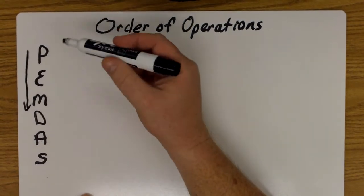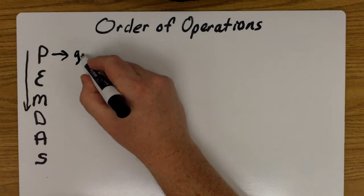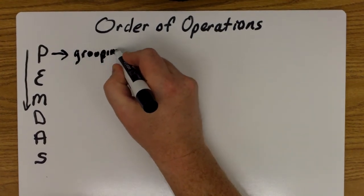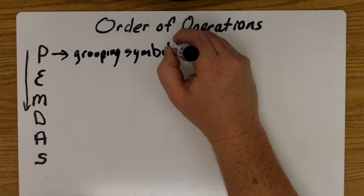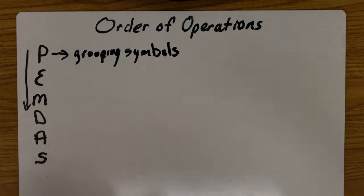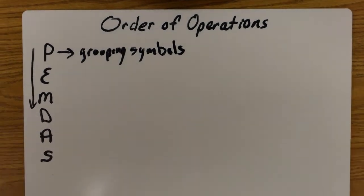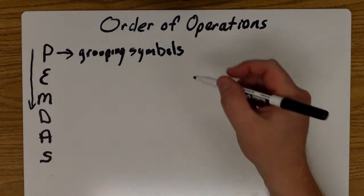Top to bottom, these must be done first. The P stands for grouping symbols, so you have to do everything in grouping symbols first. Perform everything inside of grouping symbols, and that could